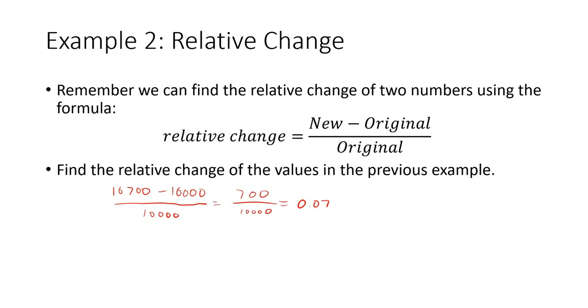Which is 0.07. If we then do the next two, $11,449 minus $10,700 divided by $10,700. We're going to wind up dividing by $10,700. $11,449 minus $10,700 gives us $749. That's $749 divided by $10,700, 0.07. So the relative change each year is 0.07.